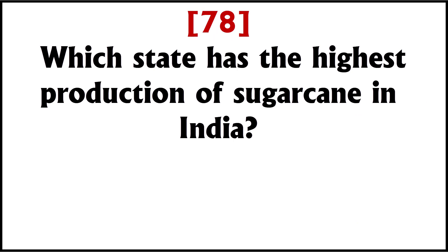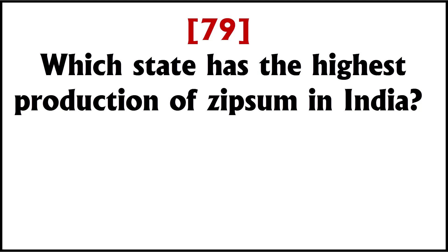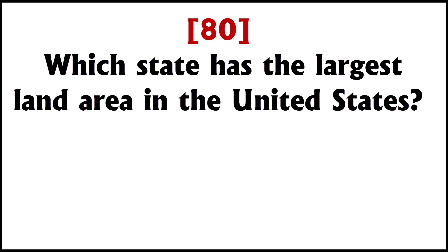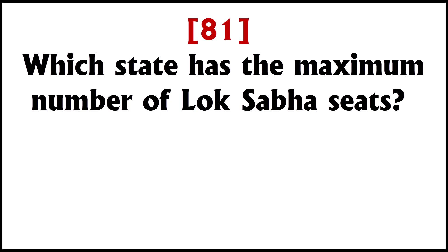Which state has the highest production of sugarcane in India? Uttar Pradesh. Which state has the highest production of gypsum in India? Rajasthan. Which state has the largest land area in the United States? Alaska. Which state has the maximum number of Lok Sabha seats? Uttar Pradesh, with 80 seats.